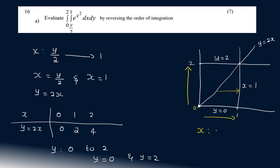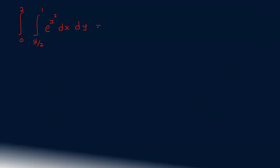x goes from 0 to 1. After reversing, y changes from 0 to 2x for the inner integration. So the reversed integral is: integral from 0 to 1, integral from 0 to 2x of e raised to x squared dy dx.